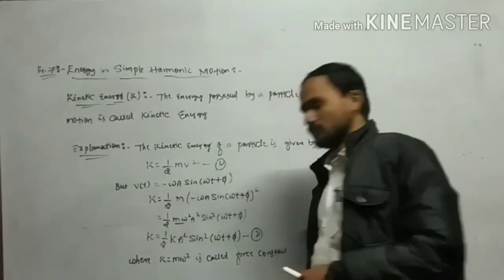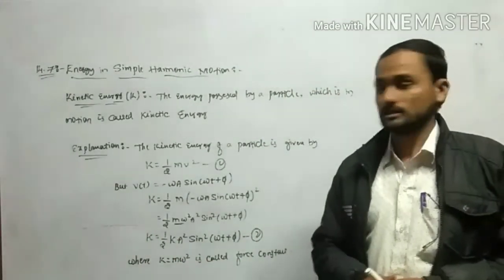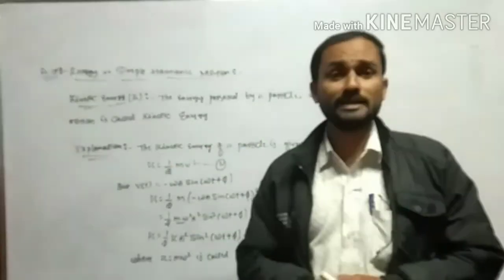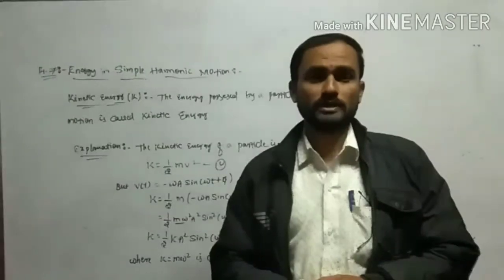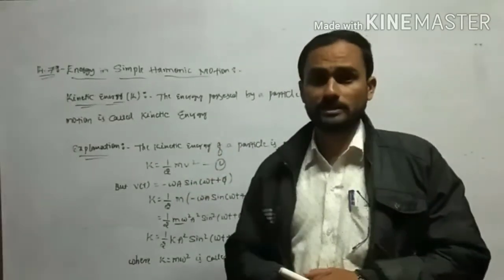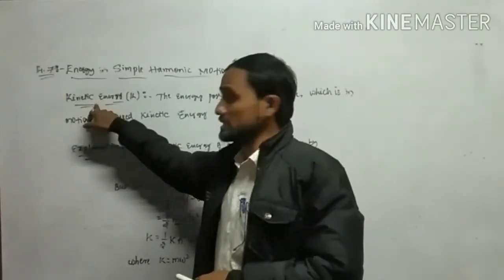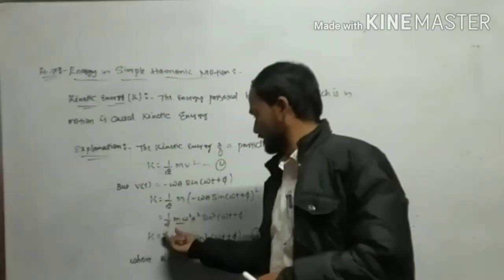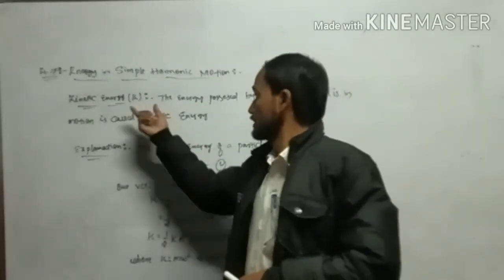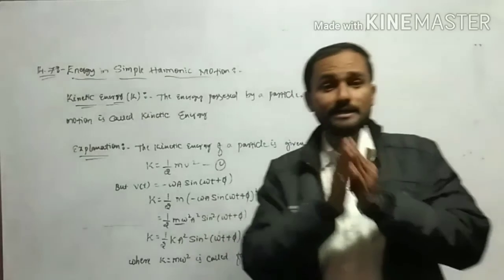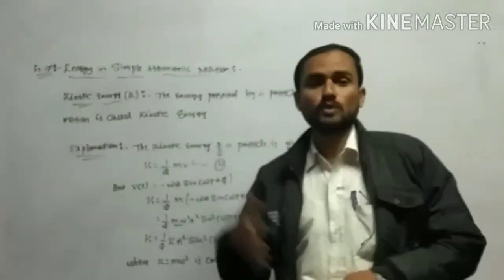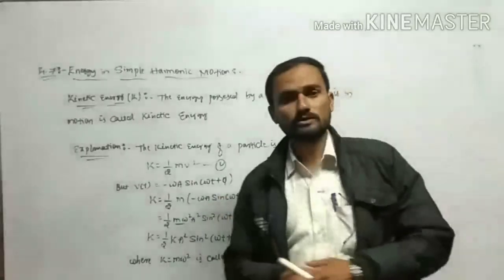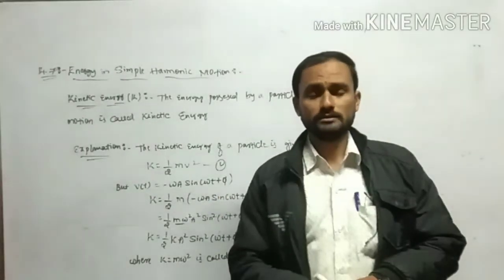The force constant k equals m omega squared. So in tomorrow's class we are going to study the potential energy and complete this concept. We will discuss the total energy value — kinetic energy plus potential energy — in tomorrow's class.